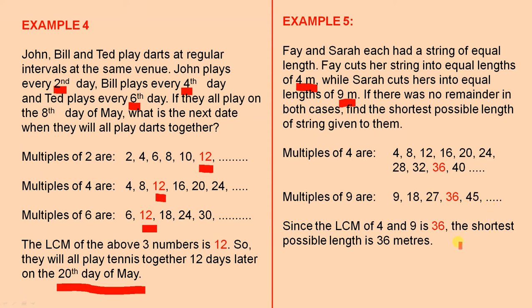Since the LCM of four and nine is thirty-six, the shortest possible length is thirty-six metres. So, each of them is given a string of thirty-six metres in length.